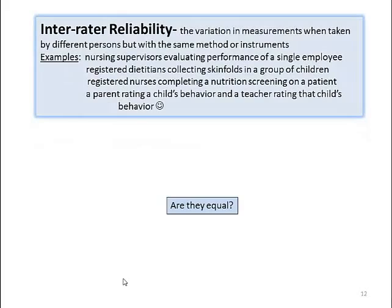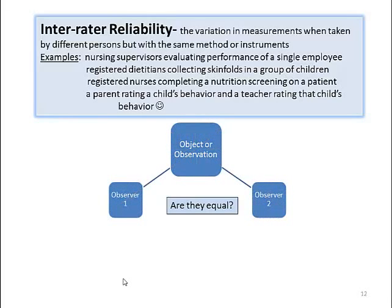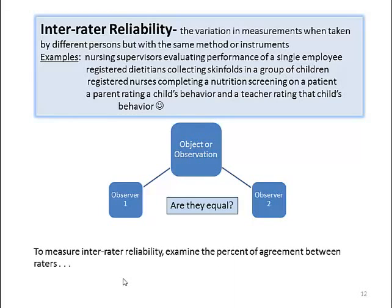The first is inter-rater reliability. This measures the variation in measurements when taken by different people using the same tool. For example, several different nursing supervisors are using the same tool to evaluate the performance of an employee, or registered dietitians are collecting skin folds in a group of children using the same skin fold caliper but coming up with different measurements. Perhaps RNs are completing a nutrition screen on a patient, or a parent is rating a child's behavior and a teacher is rating that same child's behavior. We want to know: are the observations equal when we are using the same tool?